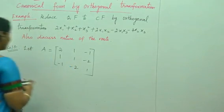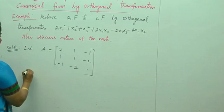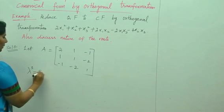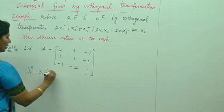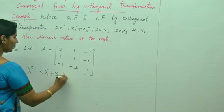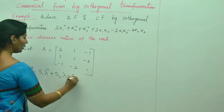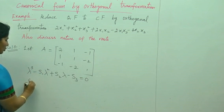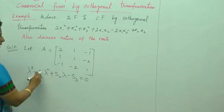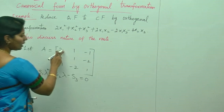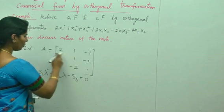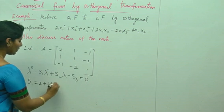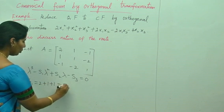To find the eigenvalues, we use: lambda cubed minus s1 times lambda squared plus s2 times lambda minus s3 equals 0. Here, s1 is the sum of the diagonal elements: 2 plus 1 plus 1 equals 4.